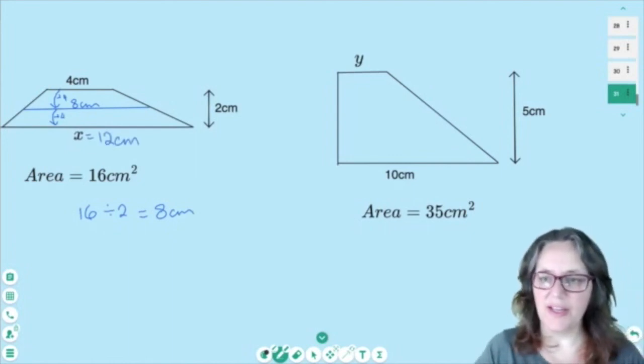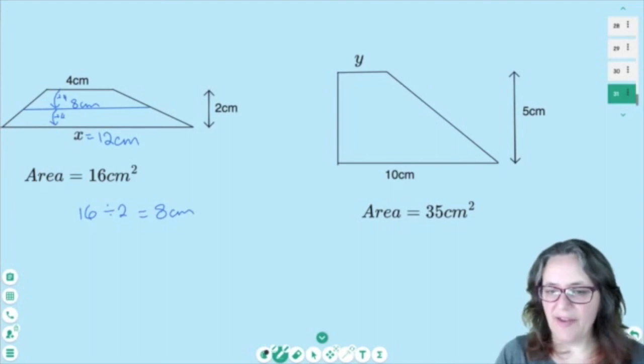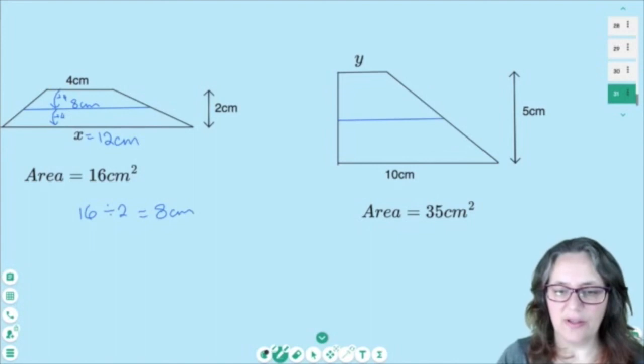And over at the right, we have the area is 35 cm squared. So that must mean that this length across the middle times by 5 is 35. So I'll just quickly work out 35 divided by 5 equals 7 cm.